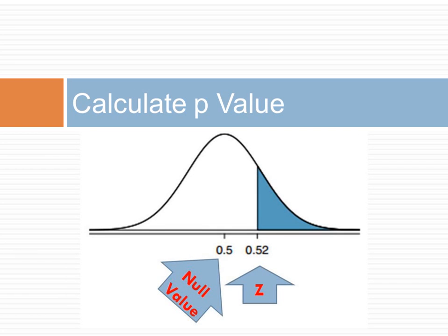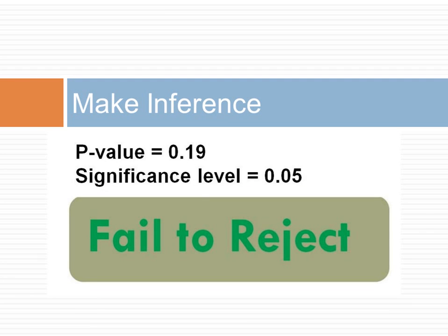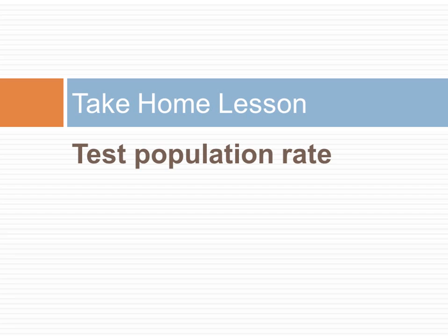We now look up the p-value associated with the z of 0.89. The z-score is 0.8133, which gives us the p-value for the right tail as 0.1867. This is the area marked in blue. Because the p-value of 0.19 is larger than 0.05, we do not reject the null hypothesis. In this lecture, we have used our inference framework to see how to test if the population rate is different from a hypothesized value.